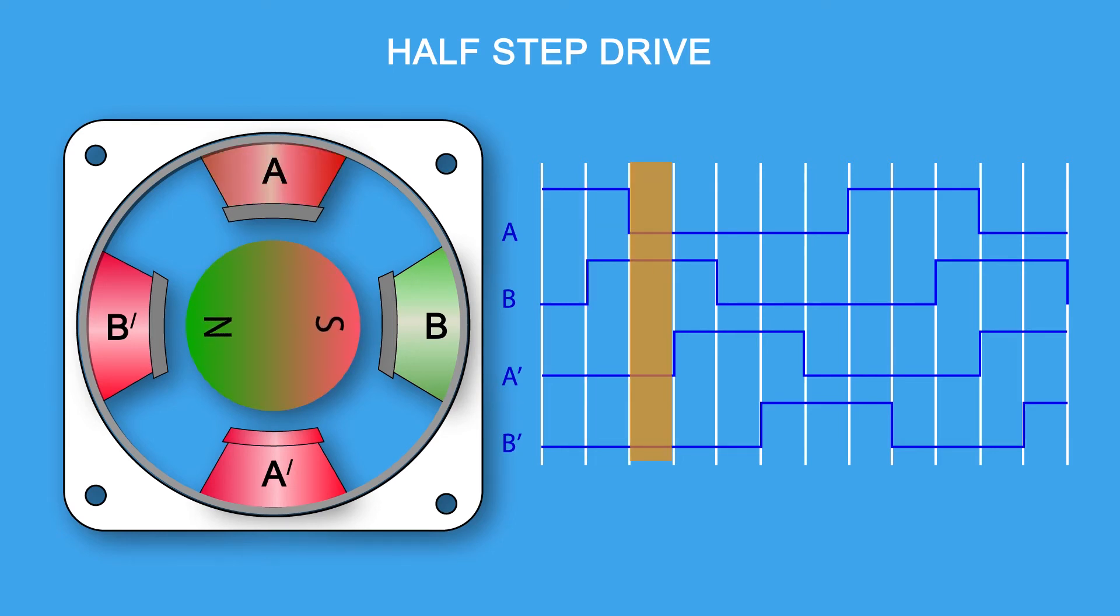Now, we turn off phase A but leave on phase B. The motor makes another step, and so on and so forth. By alternating between one phase on and two phases on, we have cut the step angle in half. Remember that, with a smaller step angle, the vibration is reduced.